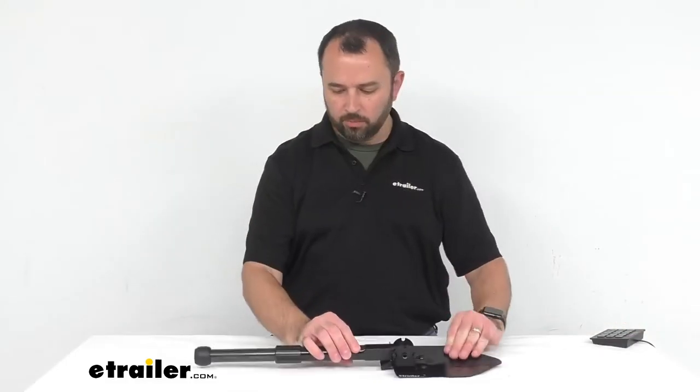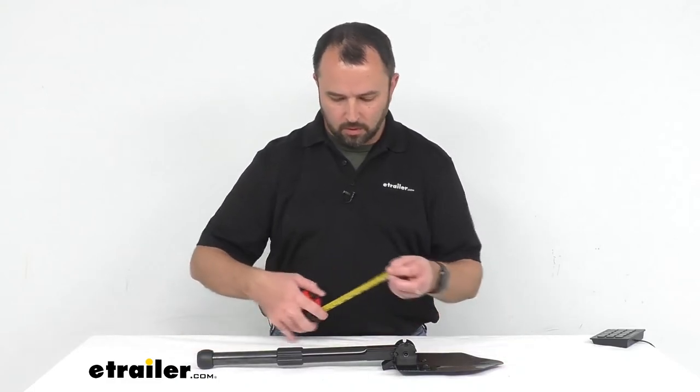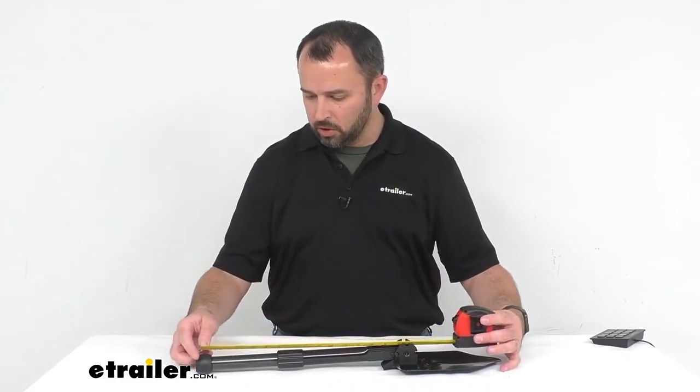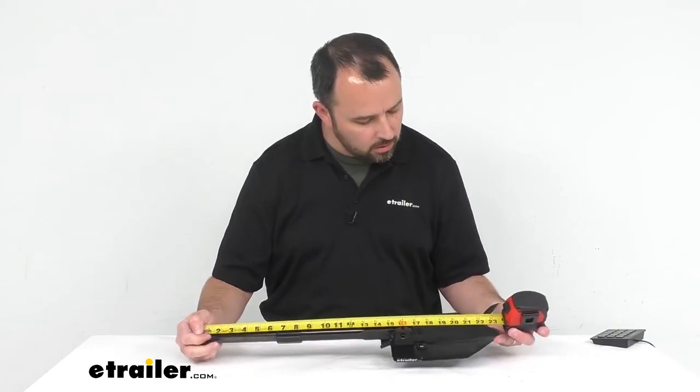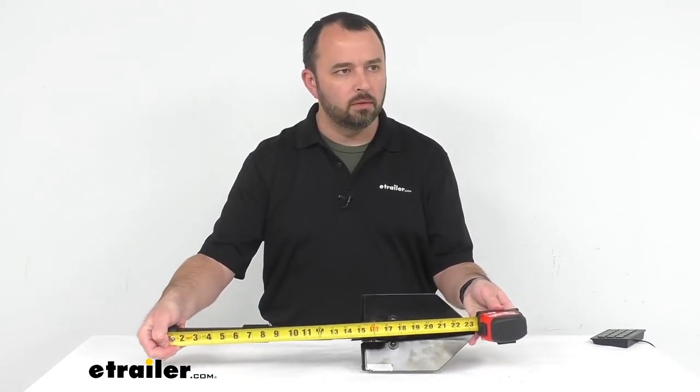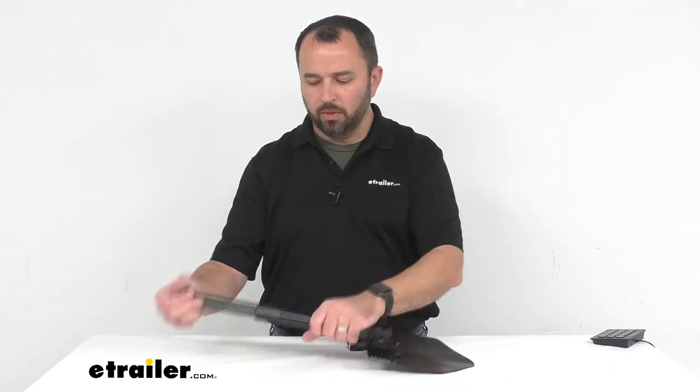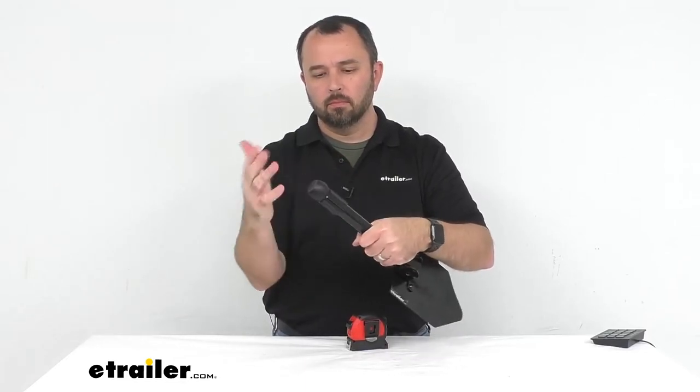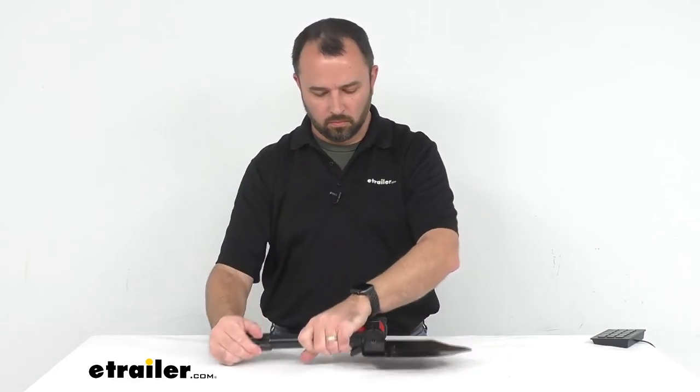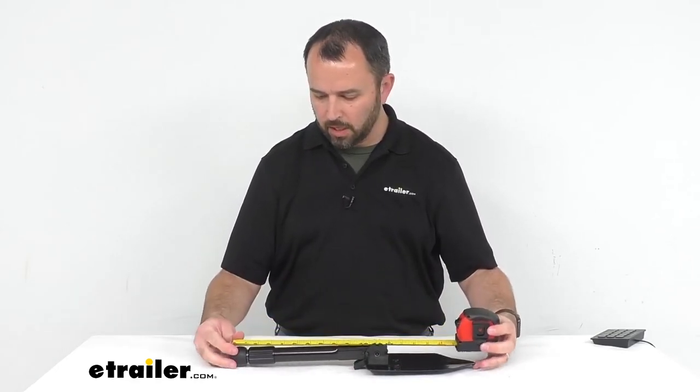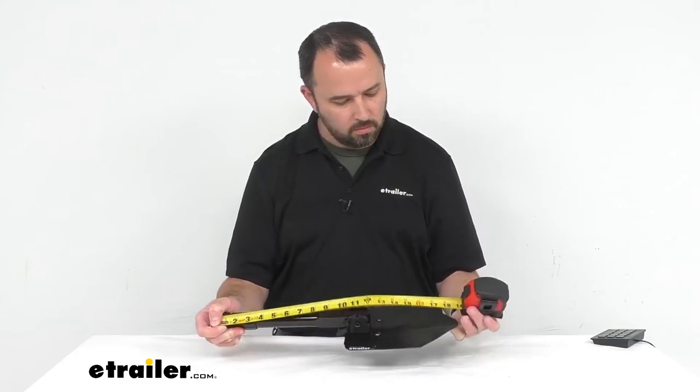So let me give you a few measurements here while we have this extended. The overall length of this shovel with the handle extended is going to be sitting right at about 23 1⁄4 inches long. And then with the handle retracted, we're going to be sitting right at about 18 and 3⁄4 inches across.